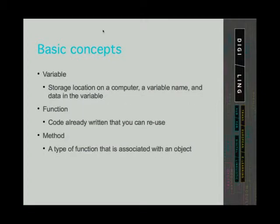Variables are a storage location on a computer that has a name associated with it and some data in it. Functions are pre-written code that we can reuse later, so that we don't have to write it every time we want to use it. Some functions are built-in, meaning they come with the program. There are also functions that are publicly available that someone else wrote and that we can use, and functions that we can write ourselves and reuse.